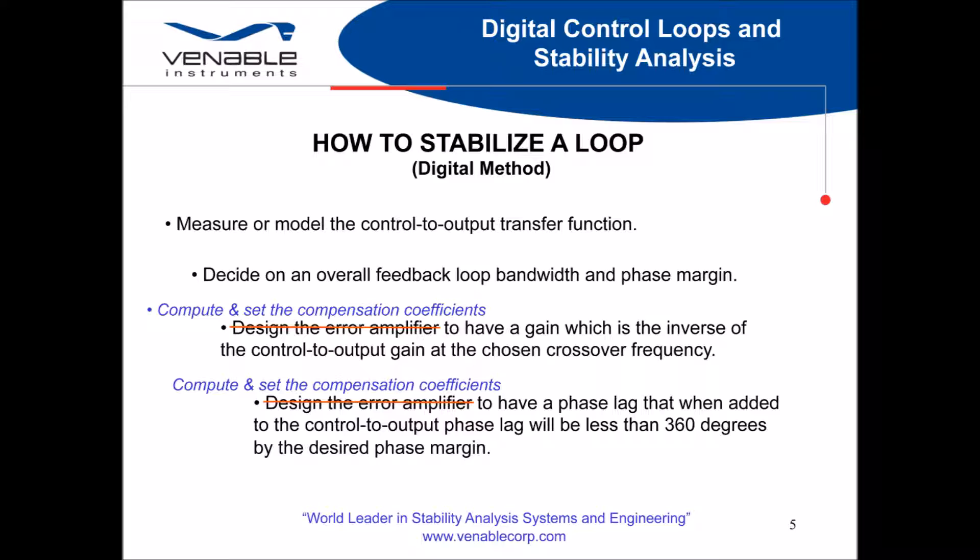The process for stabilizing a digital loop is essentially the same as the analog process. Steps 1 and 2 remain the same. First, we will measure the control-to-output transfer function. The solutions that I will present here will demonstrate the ability to measure this directly, even though it is a combination of analog and digital measurements. Next, you decide on your bandwidth and phase margin. Then, finally, we will compute the compensation coefficients that will be programmed into the target processor to achieve the required gain and phase margins and then set them.